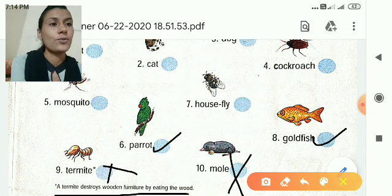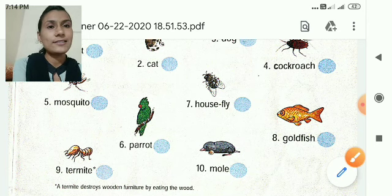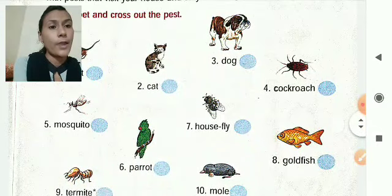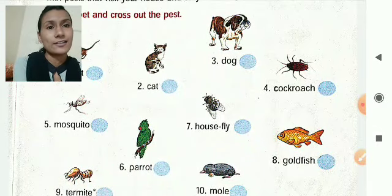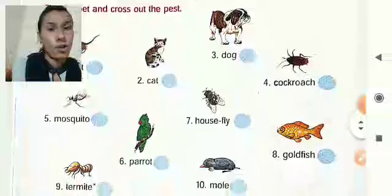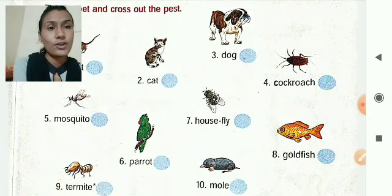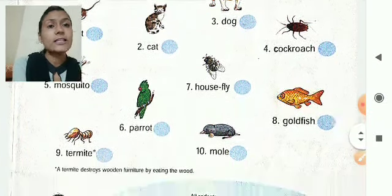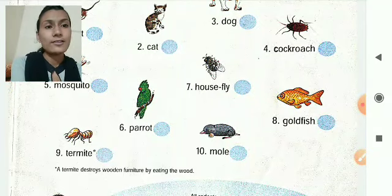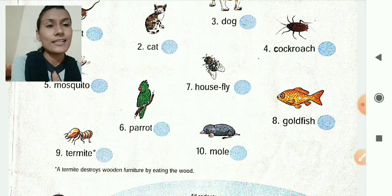So which animals are pets? Cat, dog, parrot, and goldfish — they are pets. And which animals are pests? Rat, cockroach, mosquito, housefly, termite, and mole. Why? Because they spread disease. So that's why they are pests.